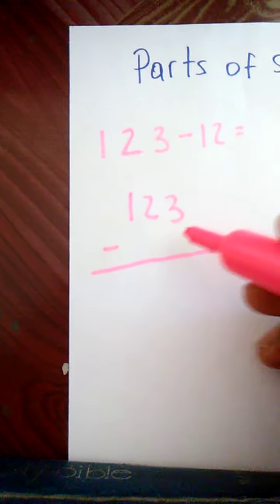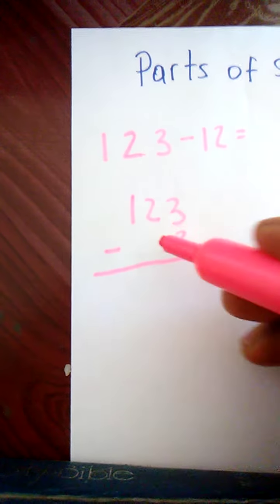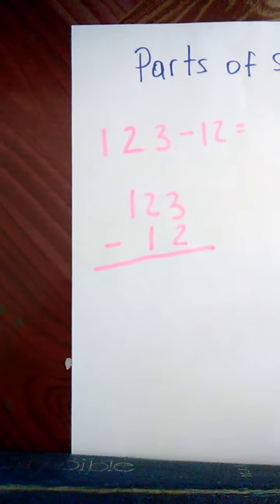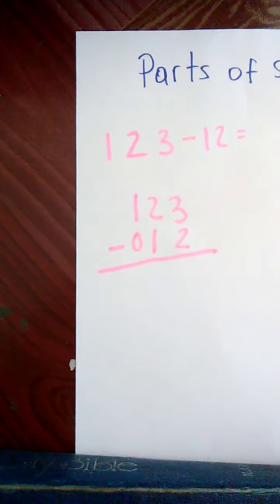This is the 1. I have to put the 1 under the 1. This is the 10. I put the 10 here and there's no 100. So I leave that space empty. If you want, you could just put a 0 there as a space holder.